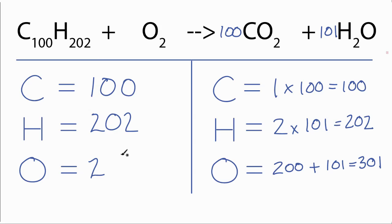We know how to fix that. We just multiply this by 301 over 2. And the 2's cancel out, and we have 301. So we'll put our 301 over 2 here. And now this equation's balanced. If we want whole number coefficients, we can multiply the top of the equation by 2.